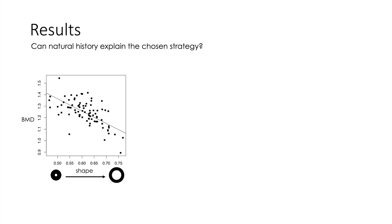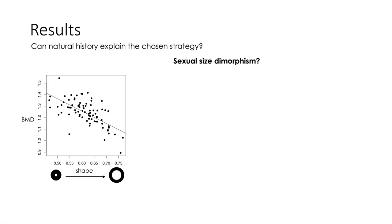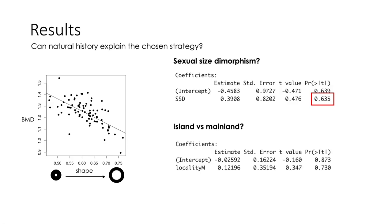Now we can ask: can natural history explain why some species choose some strategies over others? One possibility was that sexual size dimorphism could explain why some species prefer certain strategies — perhaps species where males are more aggressive prefer higher bone density — but I found no evidence for this. Another option was that taxa from islands prefer different strategies than taxa from the mainland, but again I found no evidence for this.